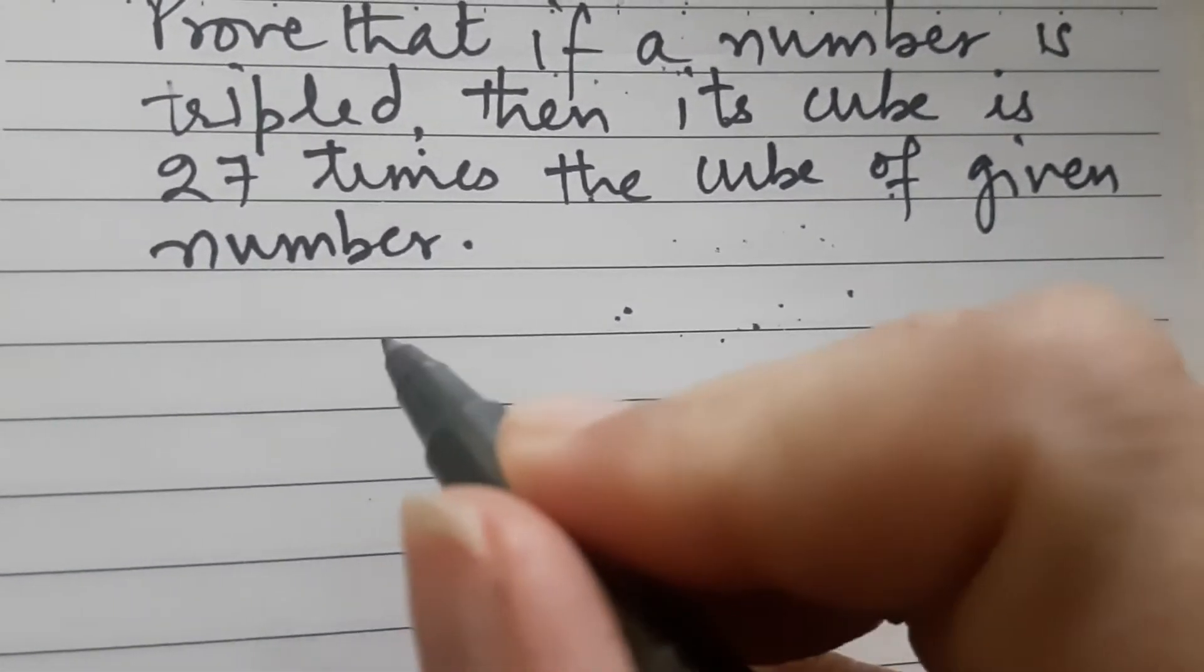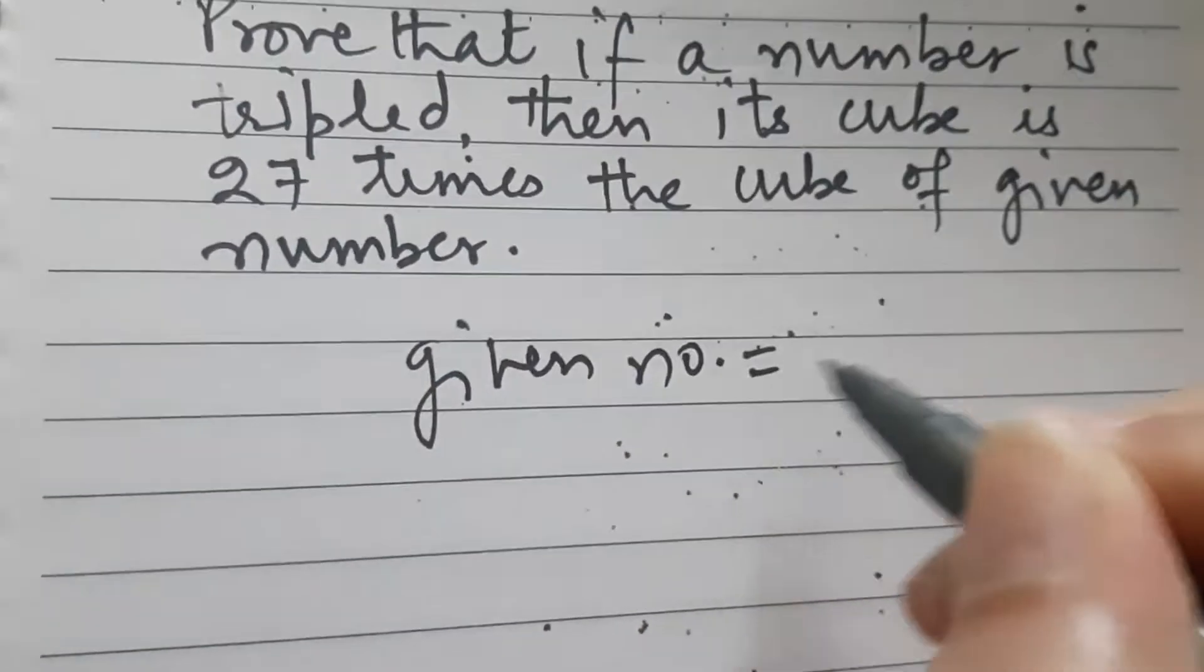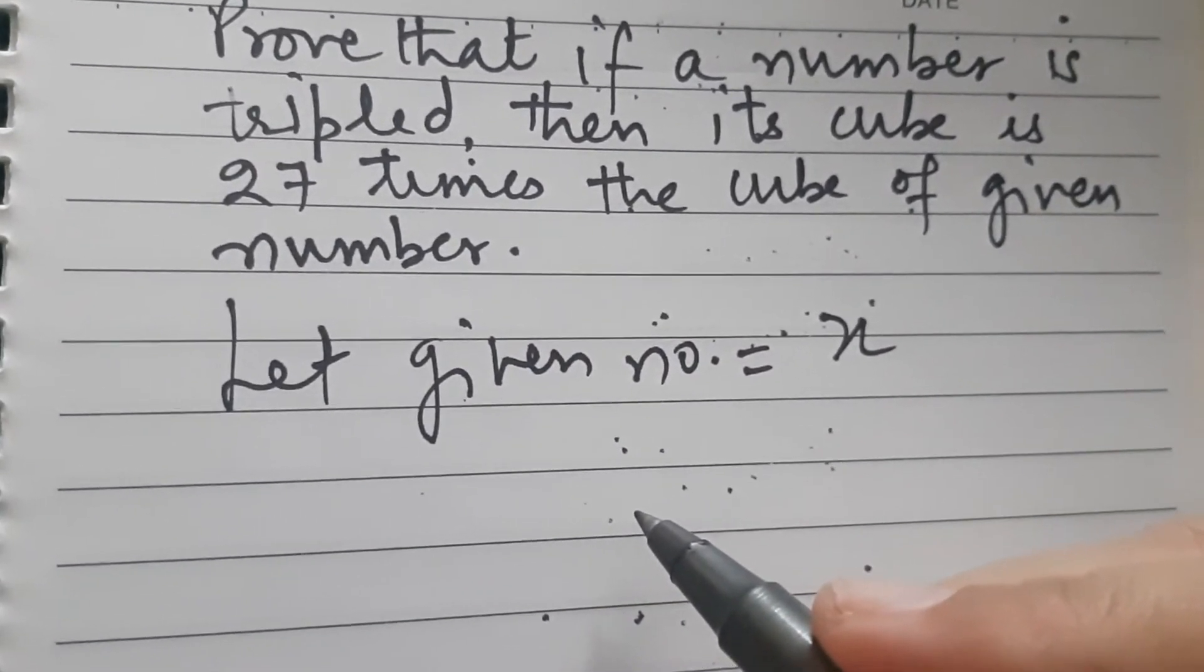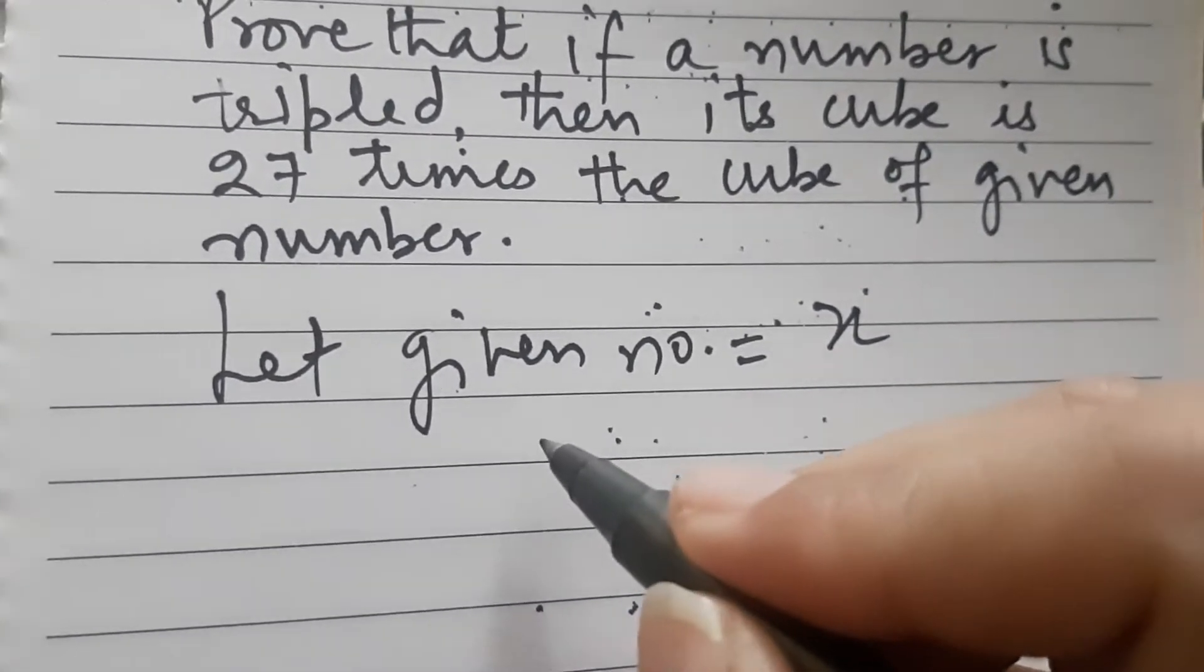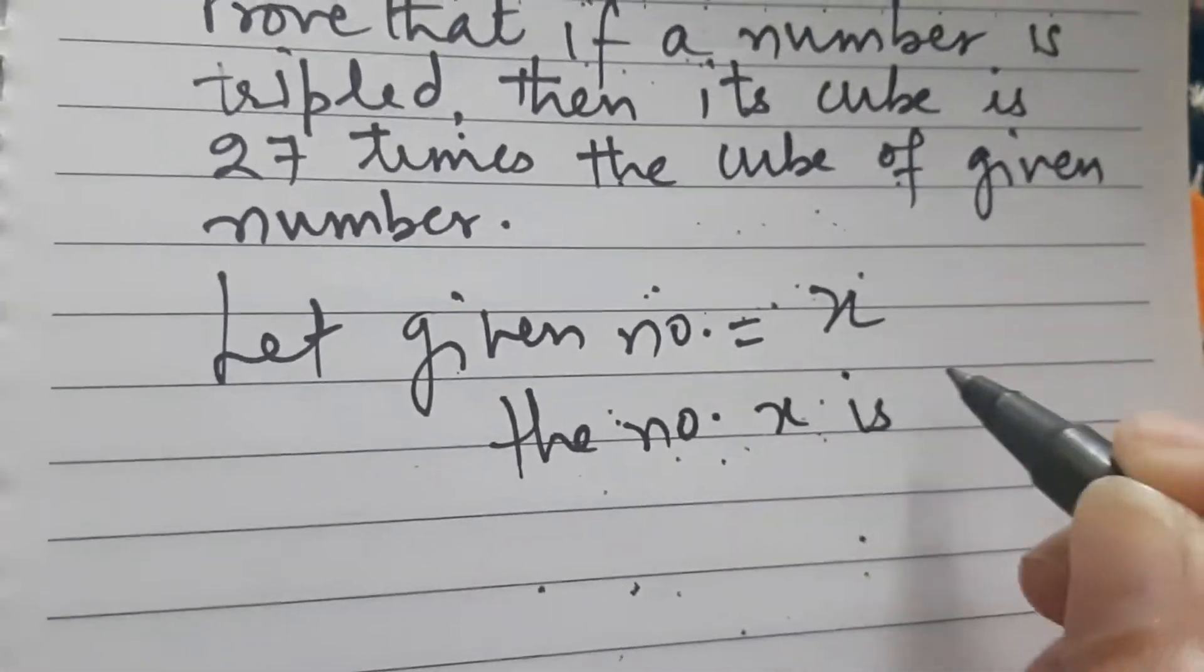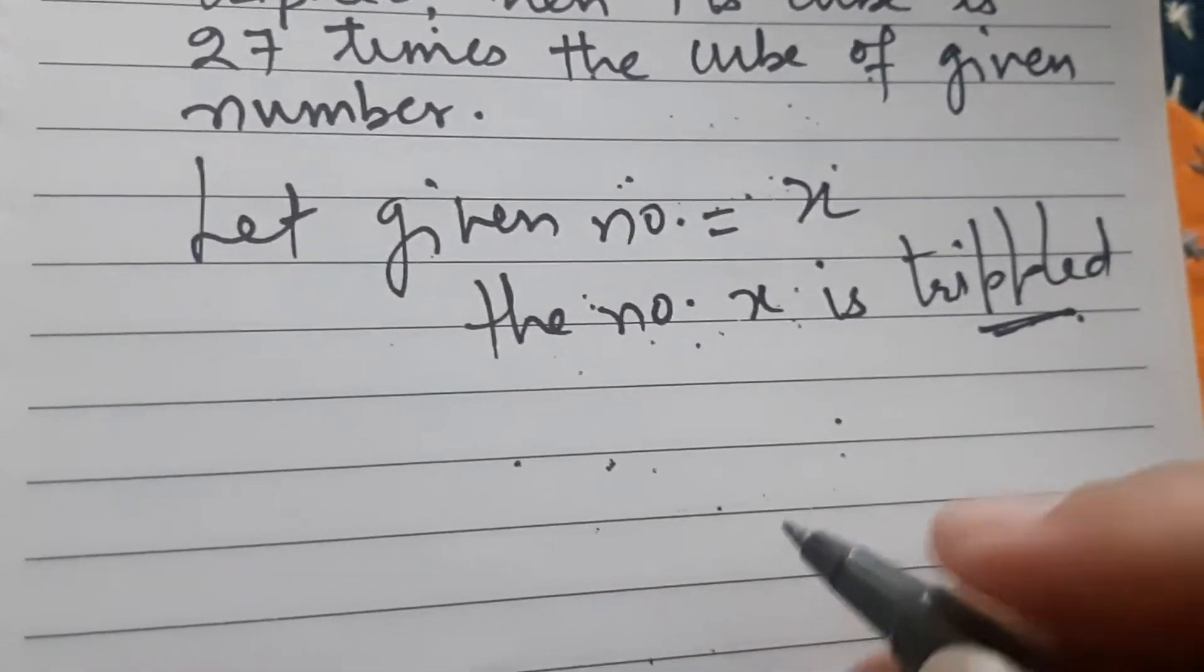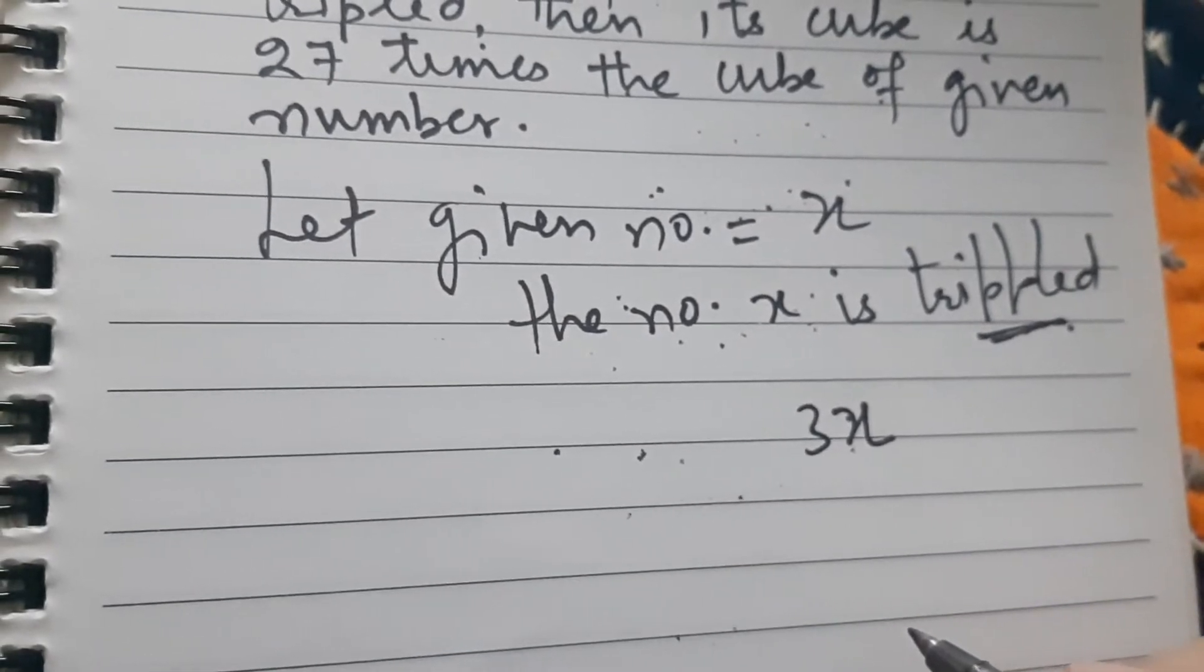So let us assume the given number be x. So we are assuming it. Now you tell me, if it is tripled, what is the meaning of this? The number x is tripled. What is the meaning of this? Yes, it means it is now 3x.